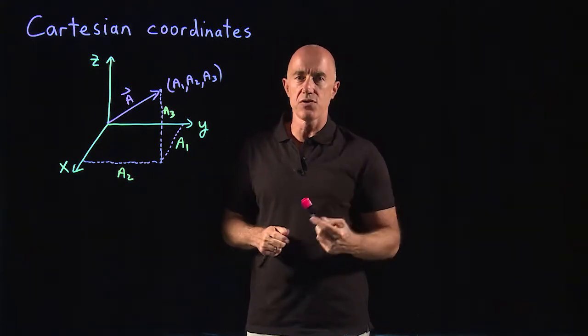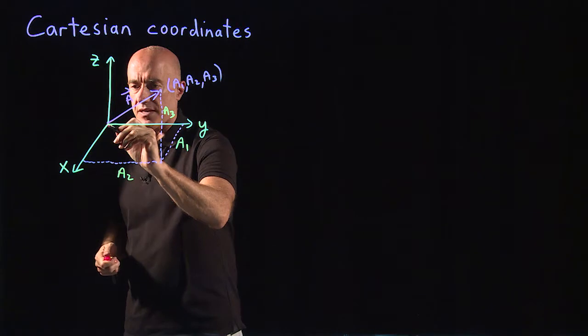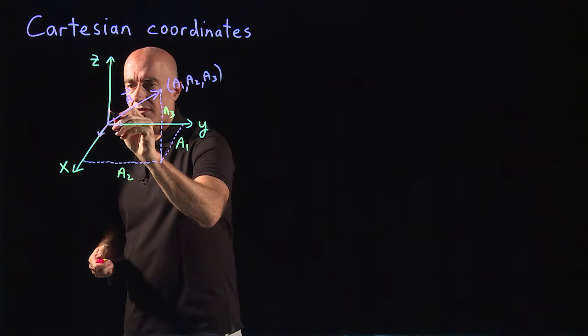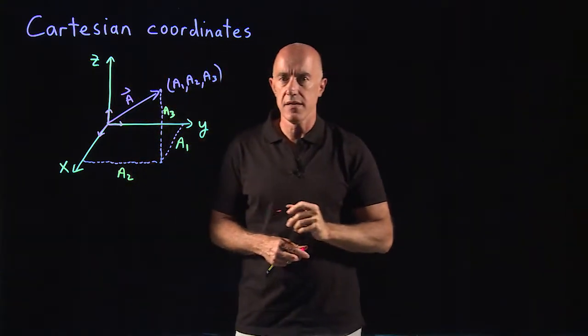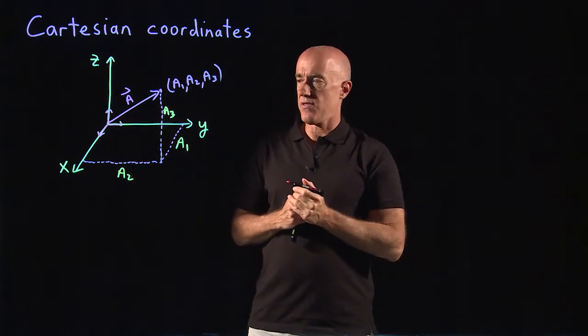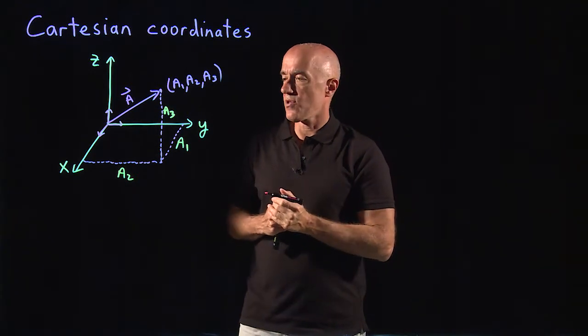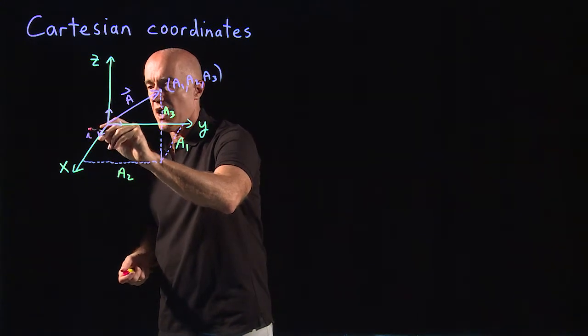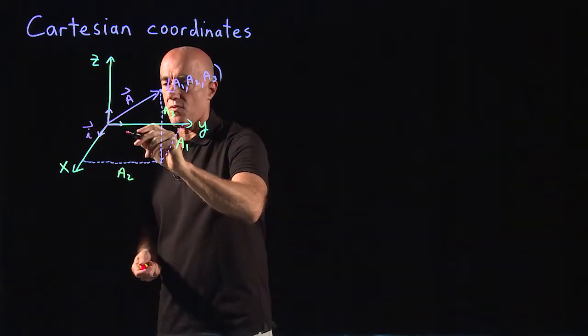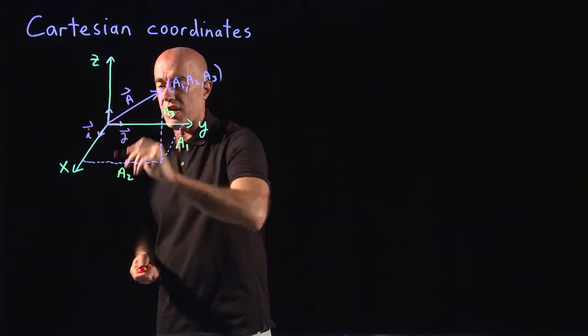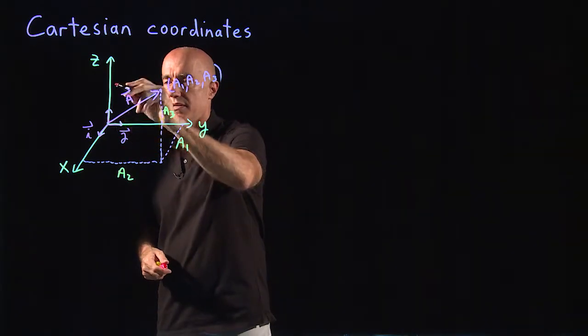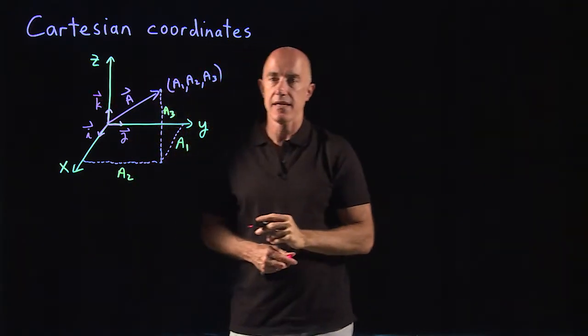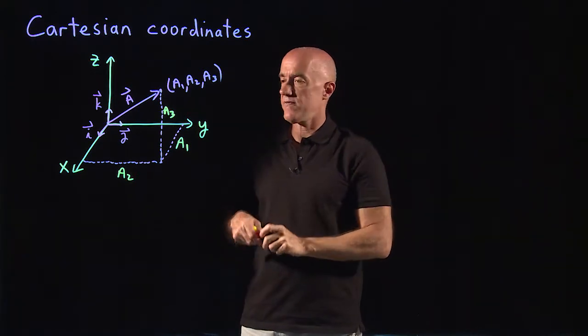We use what are called unit vectors. These are unit vectors, that means they have a length of one, that point in the direction of the three axes. The one that points in the direction of the x axis is given the name i. The one that points in the direction of the y axis is given the name j. And the one that points in the direction of the z axis is given the name k. i, j, and k are the unit vectors.